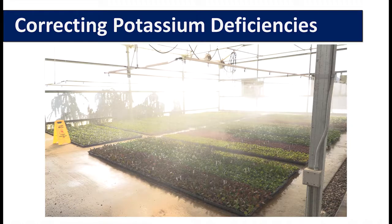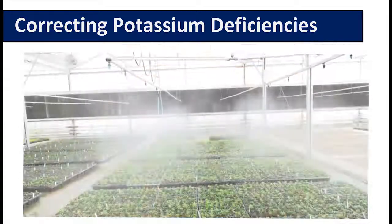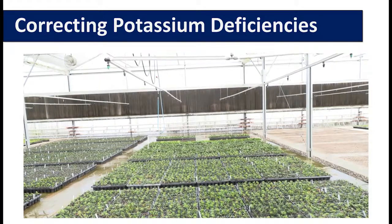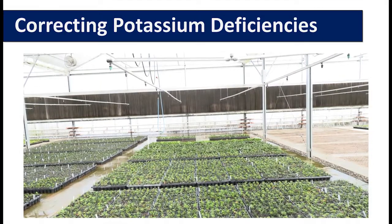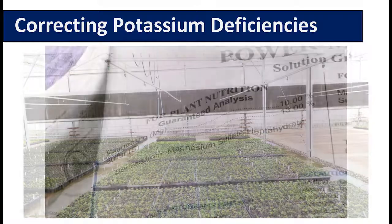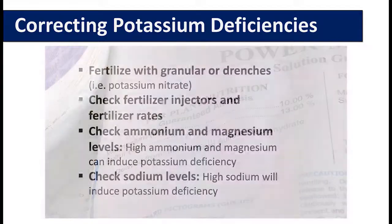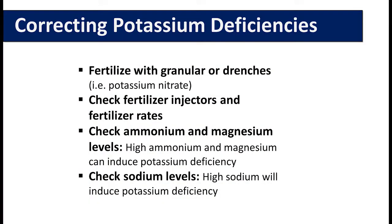If you are working in a system where there are high sodium levels — some reclaimed waters or well waters have high sodium — make sure this is not the case, because sodium competes with potassium for uptake and can cause potassium deficiency symptoms. Also check ammonium and magnesium levels relative to your potassium levels, as high ammonium and/or magnesium can also induce potassium deficiencies because these ions compete with potassium for uptake into the plant.